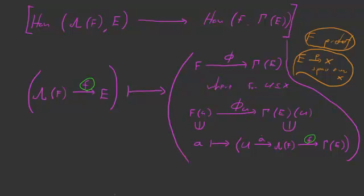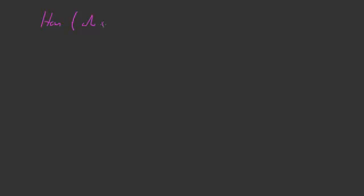Alright, let's move on to going in the other direction. Now we've got to go from hom(F, γE) into hom(λF, E). I know of two ways of defining this — let me present both. Both of them require a lemma, different lemmas, so there are two definitions each requiring a lemma to make sense.